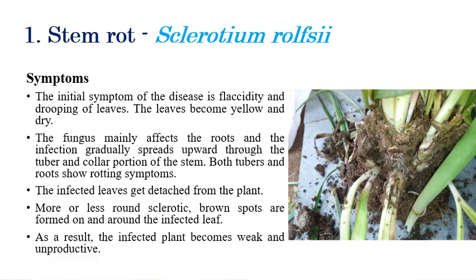Stem rot is caused by Sclerotium rolfsii. The initial symptoms are flexibility and drooping of leaves. Later stages, the leaves become yellow in color. Both the tubers inside as well as the roots get infected.